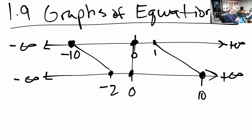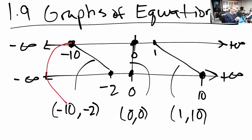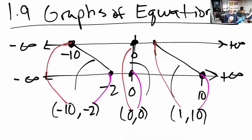You're taking two real number lines and linking numbers together in pairs. This first link we could think of as the pair negative ten, negative two. We could think of this other pair as zero, zero. This one as one, ten. I'm just listing the first number first, the second number second. It's what we call an ordered pair. The first number comes from the first line, the second number comes from the second line.